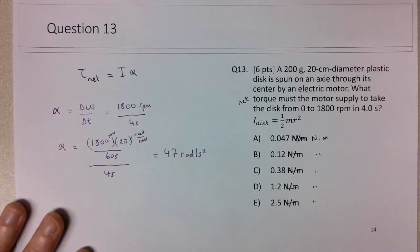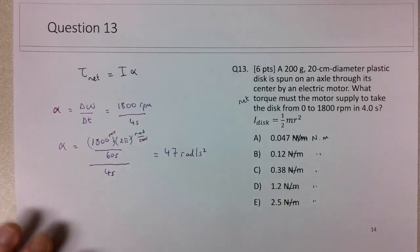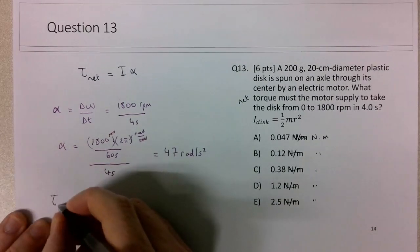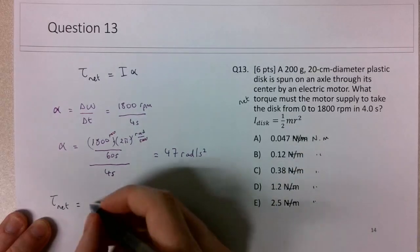So once you've done the hard work, now you can go back to the original equation and find the net torque. The net torque will be I alpha, so I is one half m r squared.